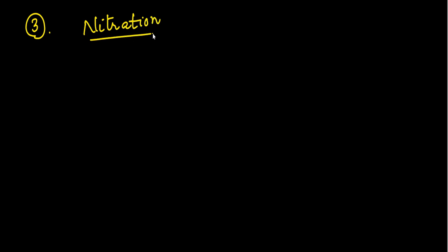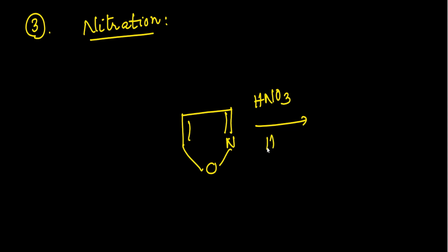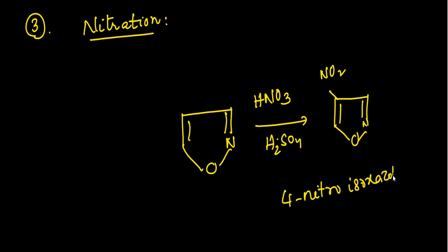The third reaction is nitration. Isoxazole reacts with concentrated HNO₃ and concentrated H₂SO₄. By nitration we get 4-nitroisoxazole, which means the nitration also takes place at the fourth position.